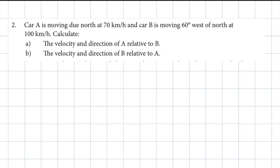Regarding relative velocity for objects on non-parallel lines, we make use of two methods. The one method is the analytical method, also known as the method of components, where we resolve each of the velocity vectors into its components and then use Pythagoras in calculating the relative velocity. And the other method is the method of parallelogram.